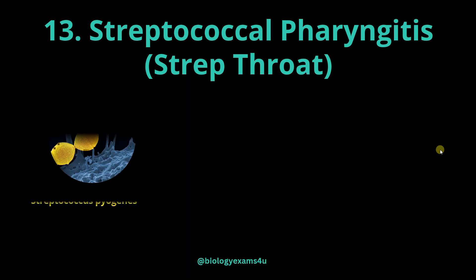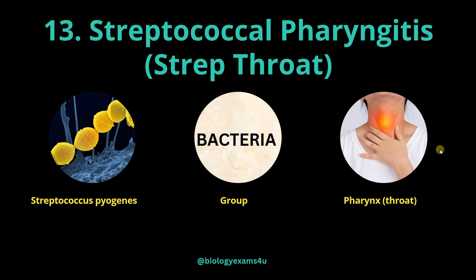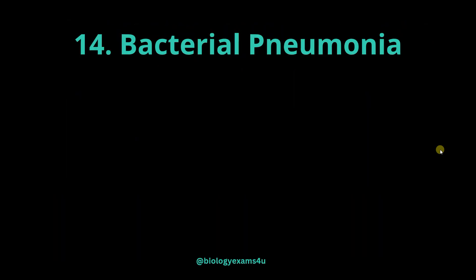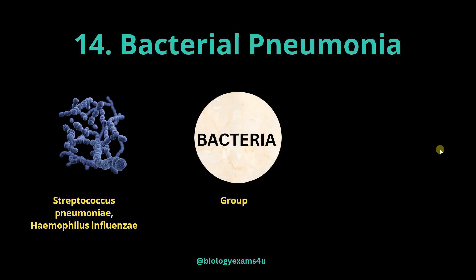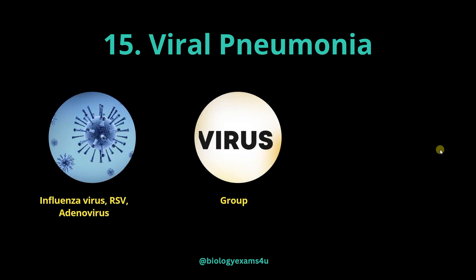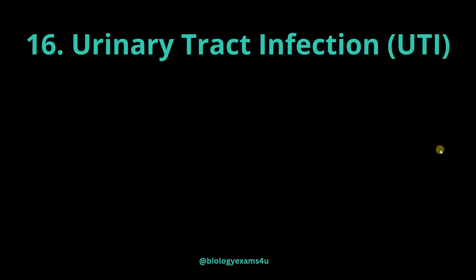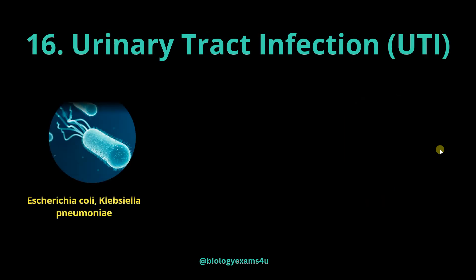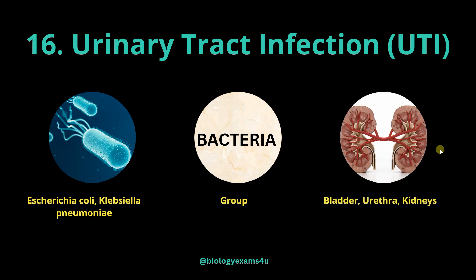Streptococcal pharyngitis is caused by Streptococcus pyogenes, a strep throat-causing bacterium that infects the pharynx or throat. Bacterial pneumonia is caused by Streptococcus pneumoniae or Haemophilus influenzae, both bacteria, and primarily infects the lungs. Viral pneumonia is caused by influenza virus or adenovirus, with the major site of infection being the lungs. Urinary tract infection (UTI) is caused by Escherichia coli or Klebsiella pneumoniae, both bacteria, and primarily affects the bladder, urethra and kidneys.